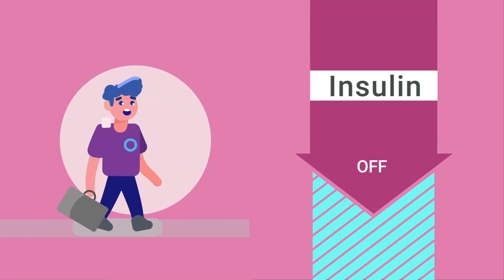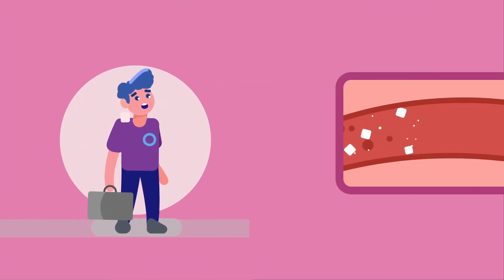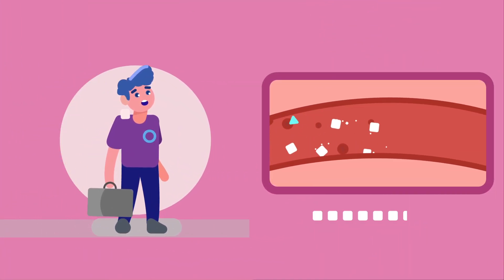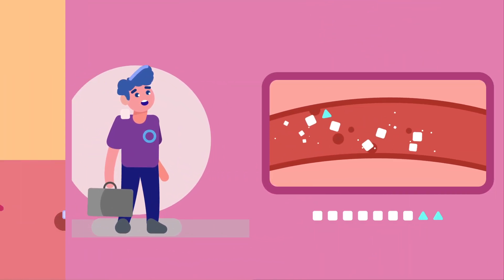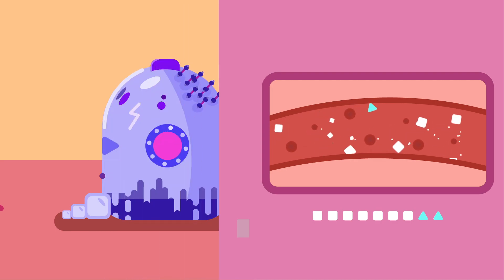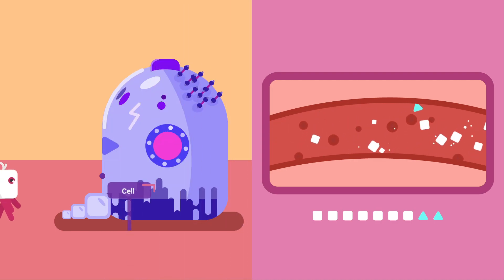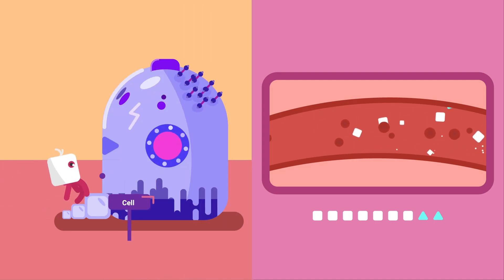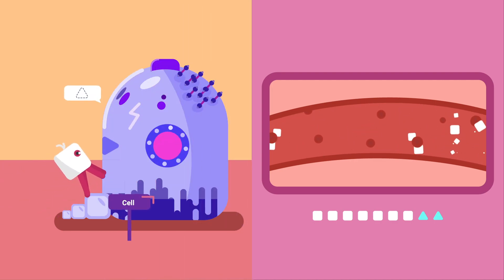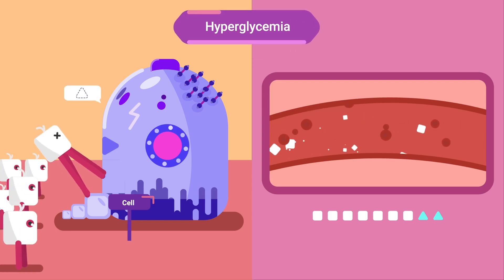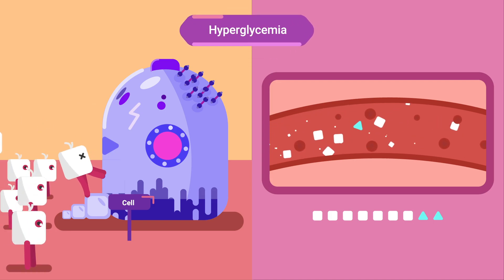When someone has diabetes, their body does not produce insulin properly. Therefore, glucose cannot enter cells and accumulates in the blood, producing hyperglycemia.